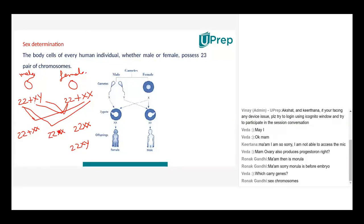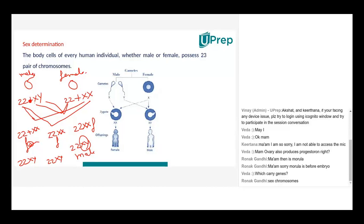In many of these combinations we get XX — which means female. When we get XY — that is male. There are many permutation combinations possible, but the end result always leads to 46 chromosomes — not more than that.